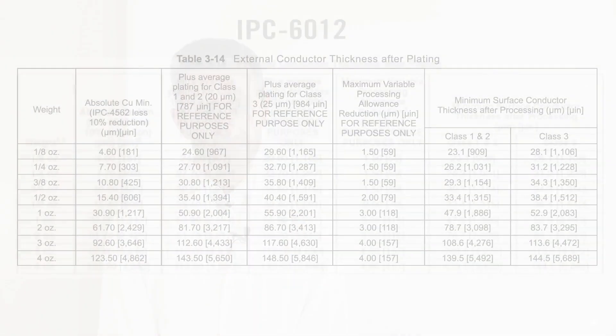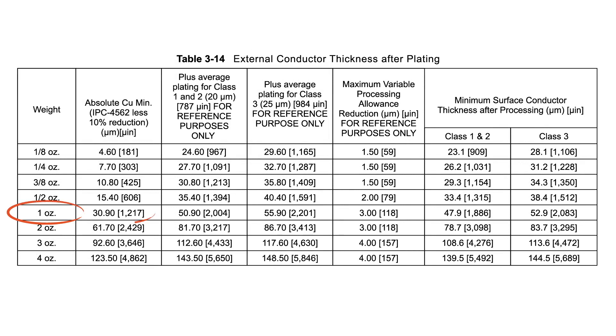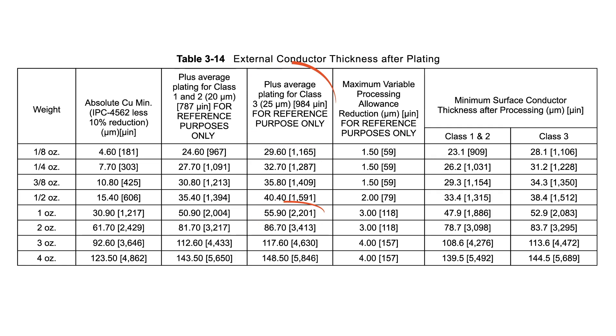If we look at the two ounce equals 70 microns perception, this is based on the idea that we have 35 microns to start, plus an additional 35 microns, or one ounce base plating. So if we start with one ounce — 30.9 microns, or 1.2 mil — plus plating, again 20 microns for class 2 and 25 microns for class 3, then allow for processing reductions of 3 microns, we will finish with 47.9 microns, or 1.9 mil, for class 2, and 52.9 microns, or 2.1 mil, for class 3.